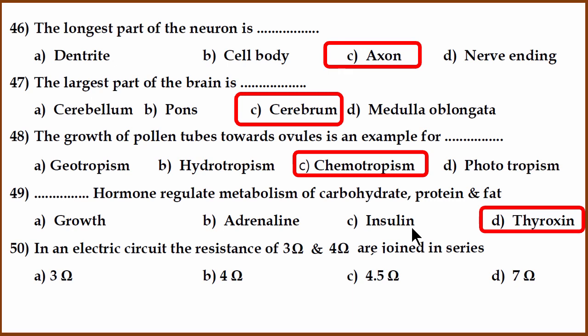Next. In an electric circuit, 3 ohm and 4 ohm are connected in series. What is the resistance if we connect 3 ohm and 4 ohm together? When you connect something in series, you have to add them. So basically it will become 3 plus 4 which is 7.